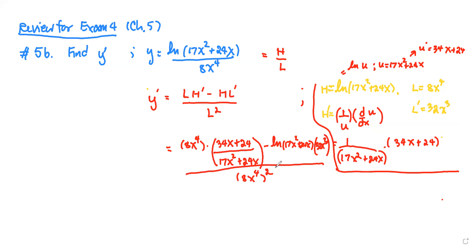It looks messy, but we can manage this: dividing means multiplying by the reciprocal. Also, (8x to the fourth) squared means 8 squared times x to the power 8, which is 64 times x to the power 8.